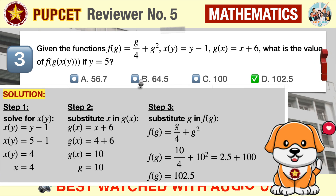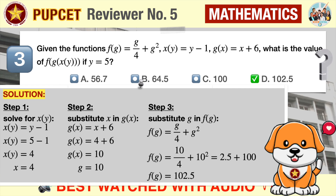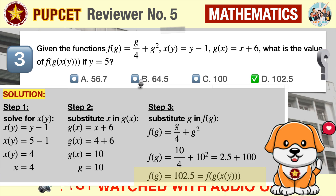Next, we substitute g = ten into the f(g) function: f(g) = g/4 + g squared = 10/4 + 10 squared = 2.5 + 100, which equals 102.5. Remember that g is the function g(x), and x is the function x(y). Therefore, f(g(x(y))) equals 102.5.